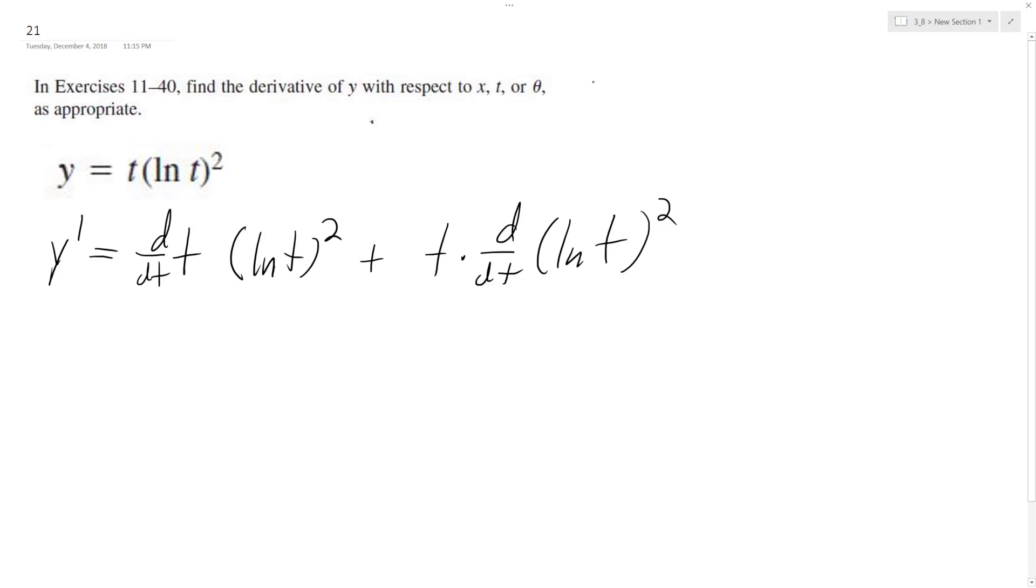So just real quick, I'm going to show, so u is equal to natural log t, du is equal to 1 over t. So if we have the derivative of u squared, we'll have 2u du, so we'll have 2 over t.